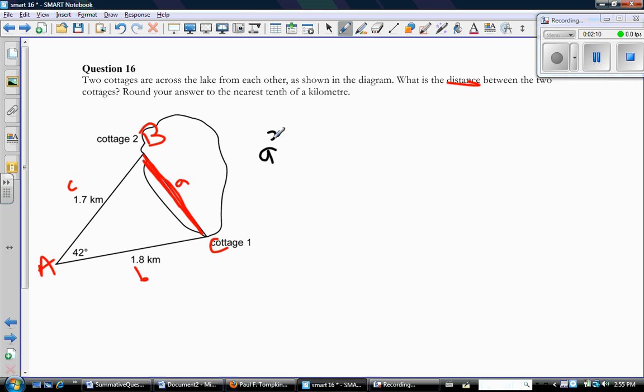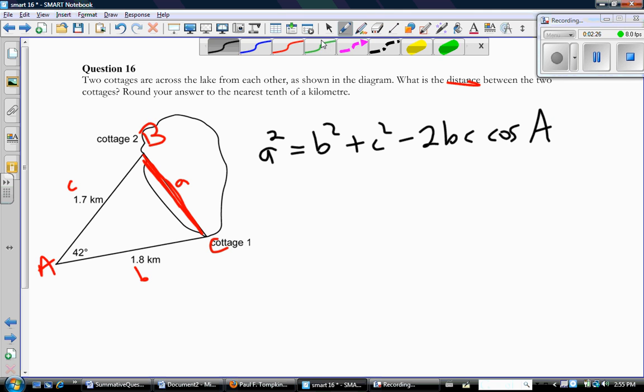So, I'm looking for little a. So, therefore, I'm going to use a squared equals b squared plus c squared minus 2bc cosine A. So, again, make sure you understand how the cosine law has to be set up.